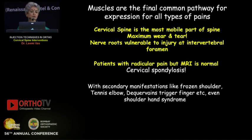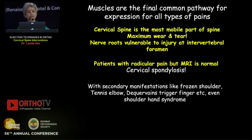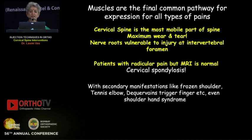The cervical spine is the most mobile part of the spine, so there is maximum wear and tear. Nerve roots as they go through the intervertebral foramina are vulnerable to injury. This is the reason why we see patients presenting with classical radicular pain but MRI will be normal. We call it cervical spondylosis and give them analgesics. These have secondary manifestations like frozen shoulder, tennis elbow, de Quervain's, trigger finger — all the upper extremity pains in the radicular distribution from C1 to T1.